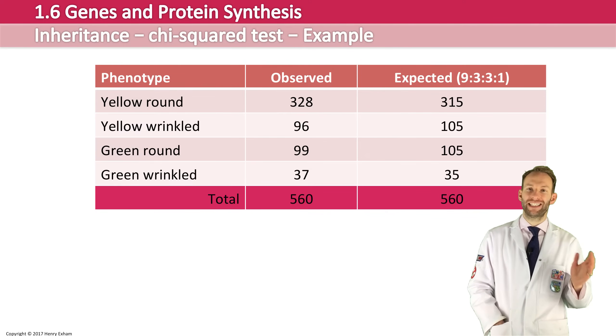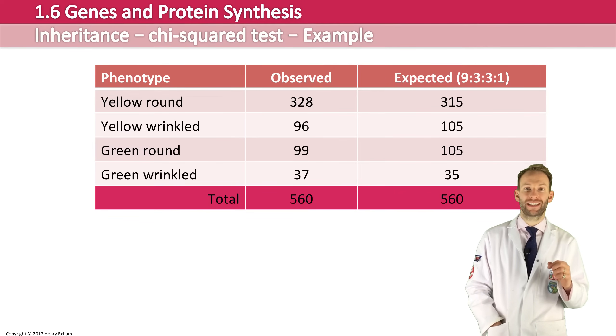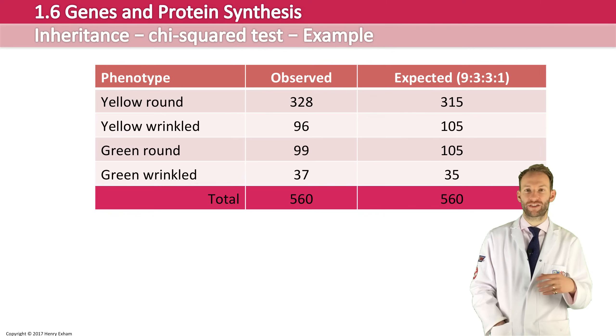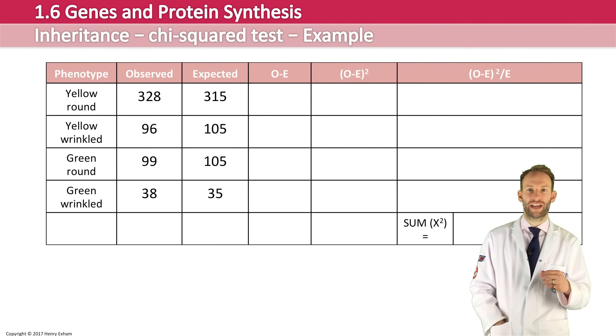Now, what we need to do is basically work through that equation, break it down and do it step by step. The best way to do this is in this table, as I've laid out here. So the first thing to do is to take observe and minus the expected from it. So I've done that in each case to form that column.